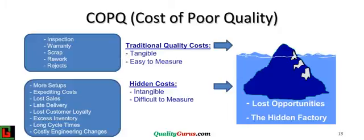Juran classified the cost of poor quality into tangible and intangible costs. This slide highlights that the intangible costs form the biggest part of the cost of poor quality. These are the costs which are difficult to measure. Tangible costs like inspection, warranty, scrap, rework, and reject costs are just the tip of the big iceberg.